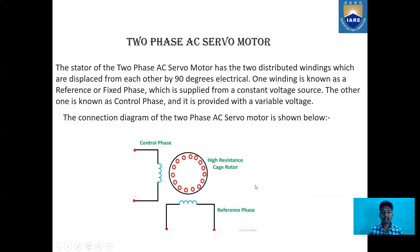Now let us see in detail what is the two-phase AC servomotor. The stator of the two-phase AC servomotor has two distributed windings which are displaced from each other by 90 degrees electrical, which can be seen here in the diagram. This is the two-phase AC servomotor winding — here is the first one and here is the second one.